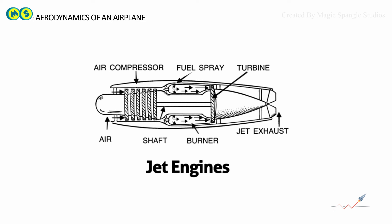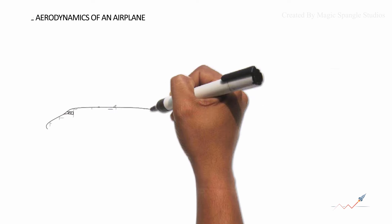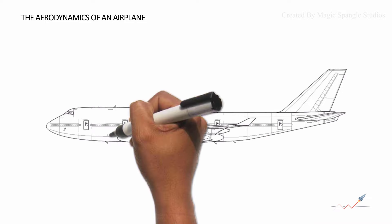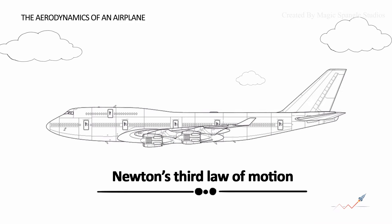The compressor inside the jet engine takes the air and compresses it, and after processing from the combustion chamber and turbine, the gas is blown out through the exhaust nozzle. Here, Newton's third law of motion is applied where the gas is pushed backward and the engine is pushed forward.